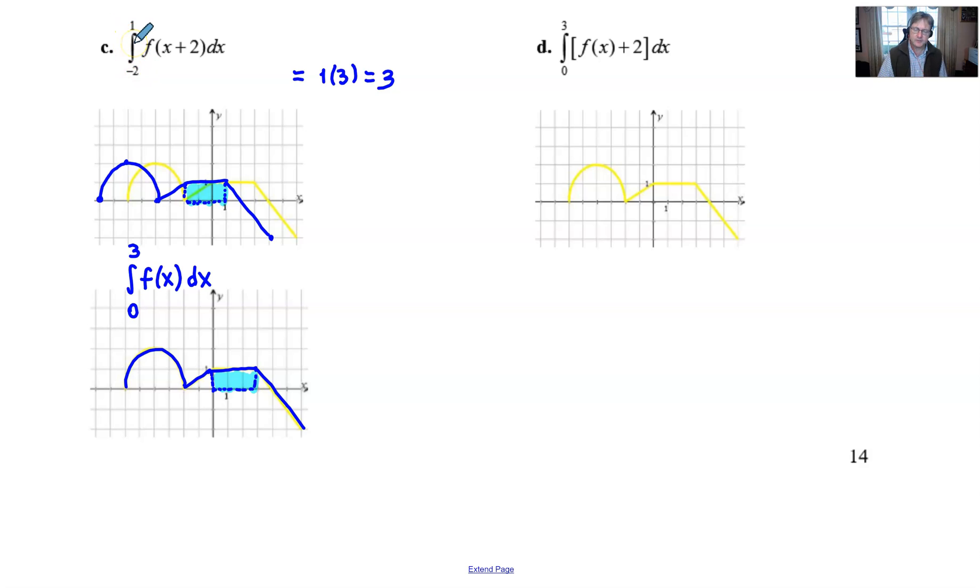Finally, in part D, this plus 2 after the f(x) is going to indicate that we are going to undergo a vertical shift, a vertical shift up 2 units. If we only graph this from 0 to 3, I only have to shift this portion up. This horizontal line is going to move up to this part here, and at that point I can then just partition this from the left to the right.